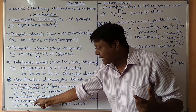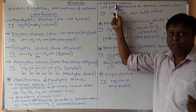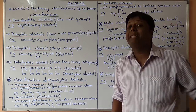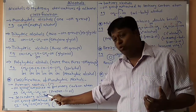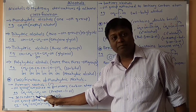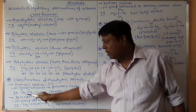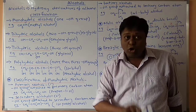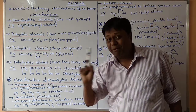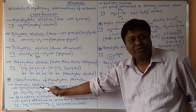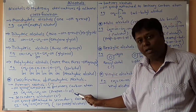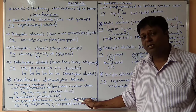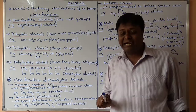This classification again depends on the attachment of the hydroxy group to the carbon atom. If the hydroxy group is attached to the first carbon atom of a chain — that is, the primary carbon atom — it is called a primary alcohol. The example is propan-1-ol, where the hydroxy group is attached to the primary (first) carbon.